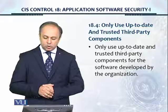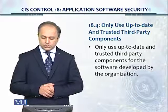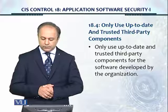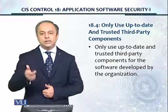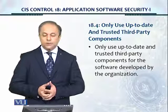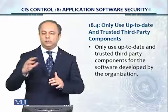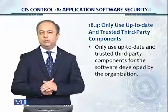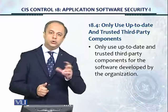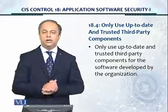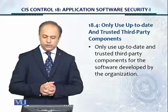18.4: Only use up-to-date and trusted third-party components for the software developed by the organization — meaning libraries and other types of utilities. Those should all be trusted, and you should actually look for vulnerabilities on Google before deploying them because these are usually published. If there are vulnerabilities in the libraries or utilities which you need to embed into your software, then by very definition your software is also going to be insecure. That's all we have for this module. Thank you.